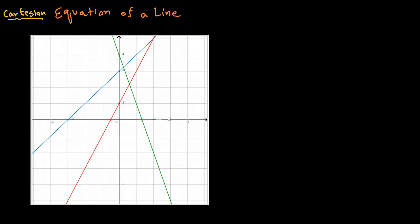When we want to find the equation of a line, we want to find the Cartesian equation of a line. It means any equation that has two variables, x and y, and it would be a picture like shown here. So this is the picture of a line.